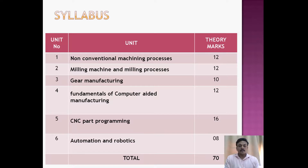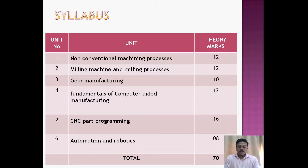The sixth chapter is automation and robotics. It covers the definition of automation, types of automation, group technology concepts, flexible manufacturing systems, lean manufacturing, and FMS compared with other machining processes. The components of robotics covered include the end effector, actuator, sensor, and controller.